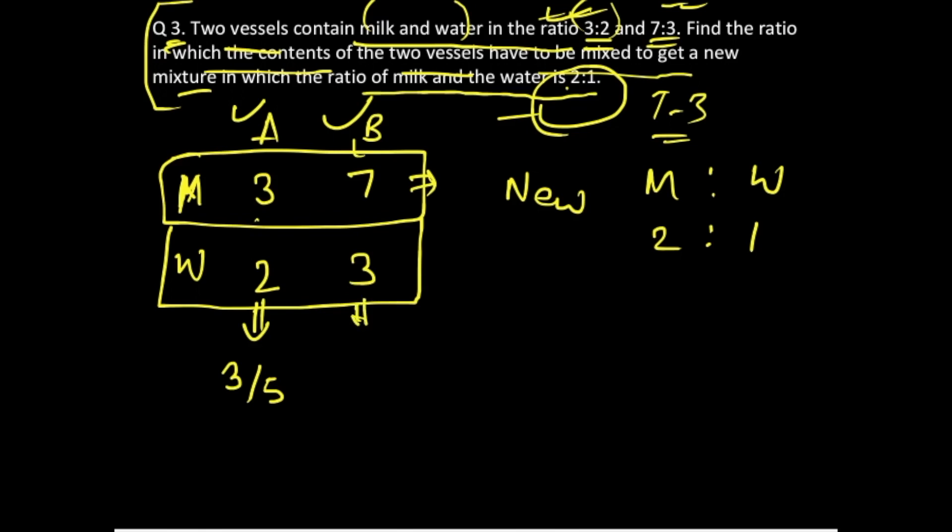Now in the new mixture, the quantity of milk is 2 parts over 3. So these are our new values which we have arrived at while considering the entity of milk.